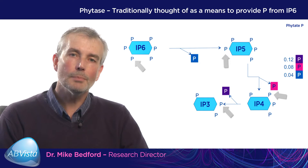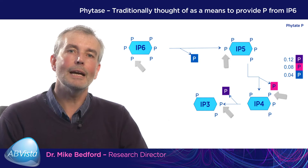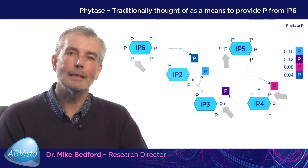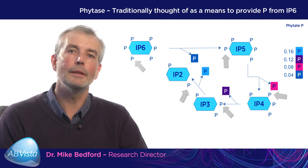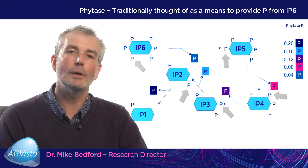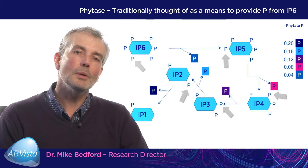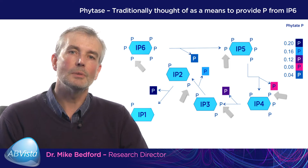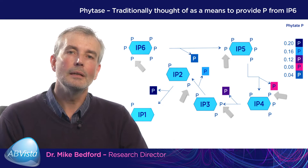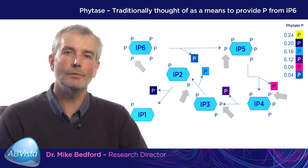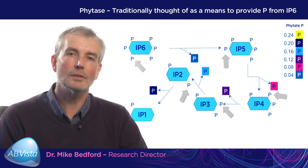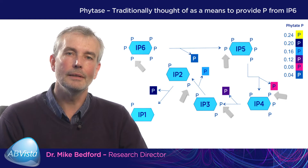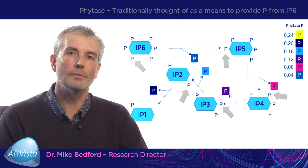In this part, what I want to discuss is what happens when we break down IP3 to IP2 and then IP2 to IP1, since IP1 is a substrate for the animal's own endogenous alkaline phosphatases. With these enzymes, the animal can take off the last phosphorus from IP1, producing inositol. And that is the focus of this talk.